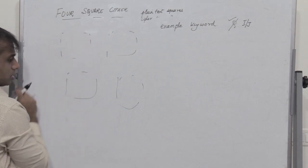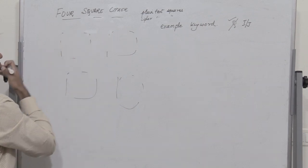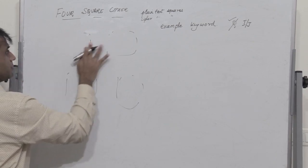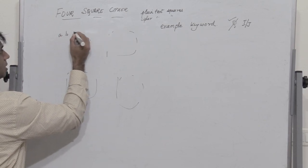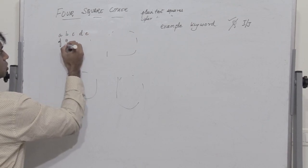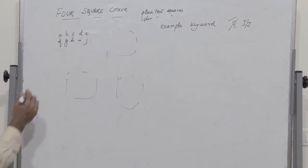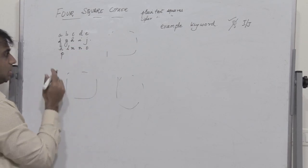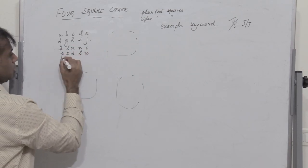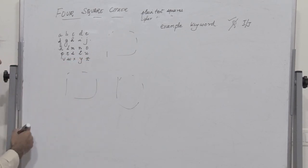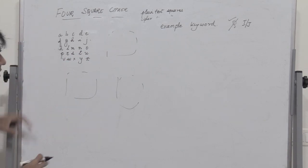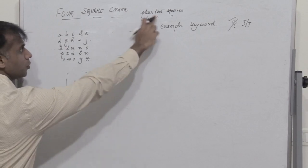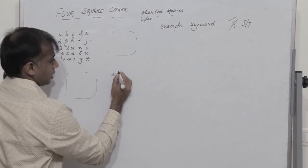Now let me write the plain text squares. To distinguish between the plain text squares and the ciphertext squares, I write the plain text squares with alphabets in lowercase. So I have a, b, c, d, e, f, g, h, i, j, then k, l, m, n, o, p — Q is eliminated — then r, s, t, u, v, w, x, y, z. This is the plain text square, and I write the same sequence for the second plain text square at the bottom-right.